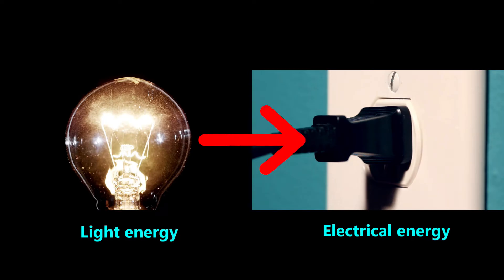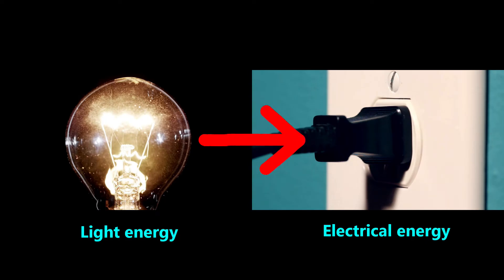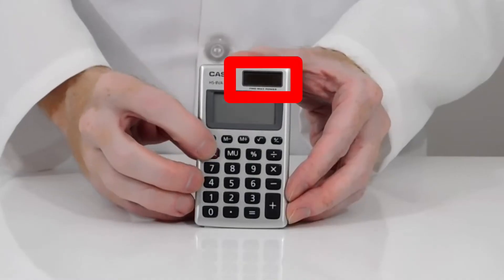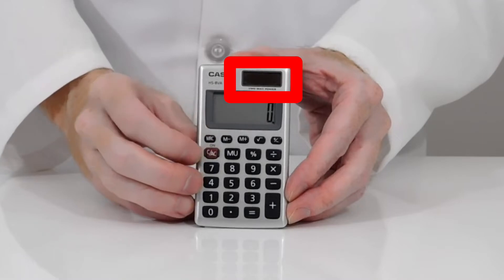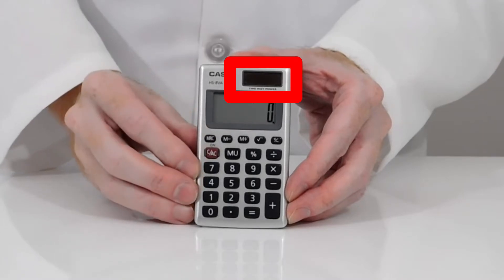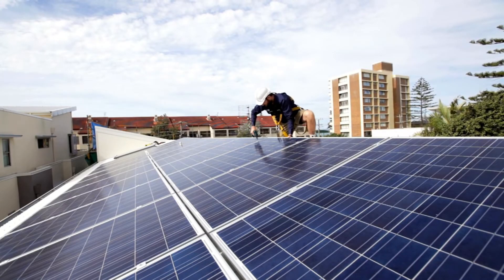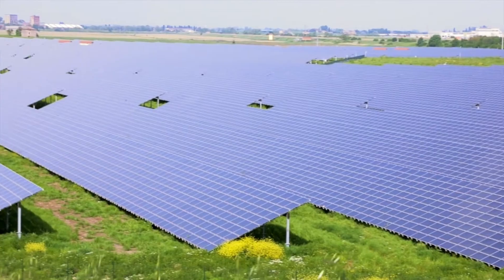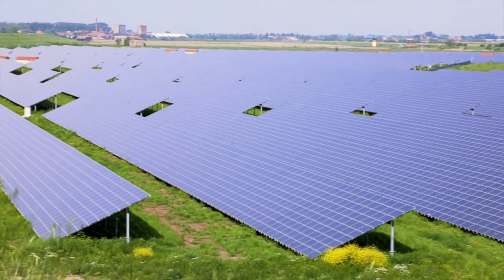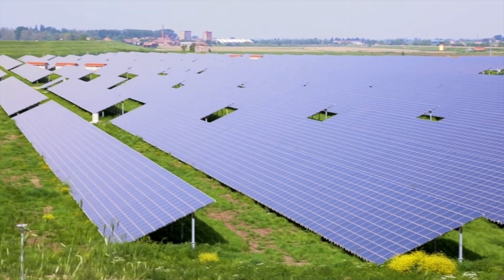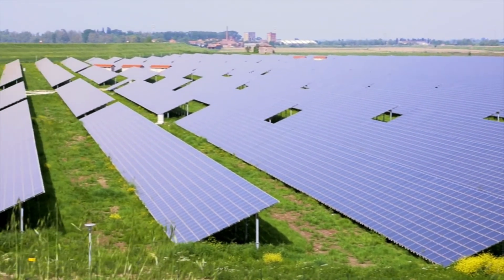Next, we'll look at how light energy is converted to electrical energy. Solar cells convert light energy into electrical energy. The more light energy they absorb, the more electrical energy they give. Some solar panels and arrays are so big that they can power many homes.